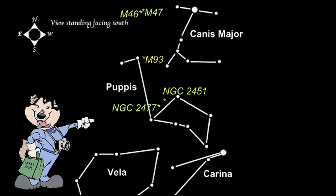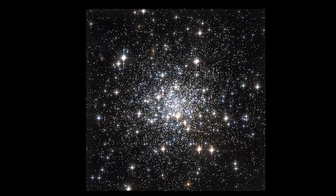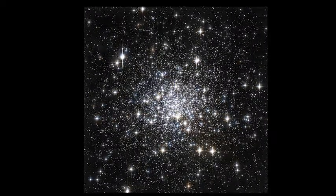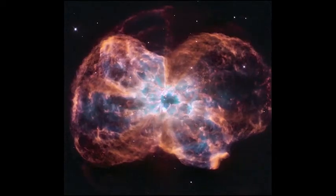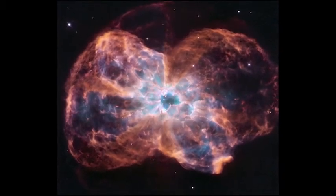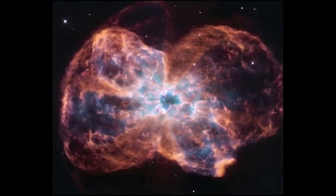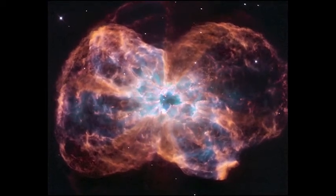If you are looking for a nice globular cluster, then set your scope on NGC 2298. It has a magnitude of 9.3 and is 30,000 light years away. In a small scope, NGC 2440 will appear as a fuzzy star, 20 seconds in diameter. It is a planetary nebula of magnitude 9.4, located 4,000 light years from Earth.